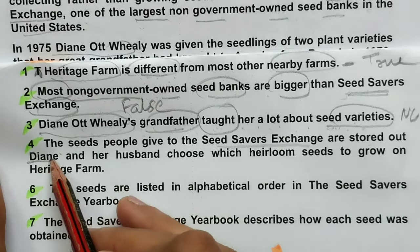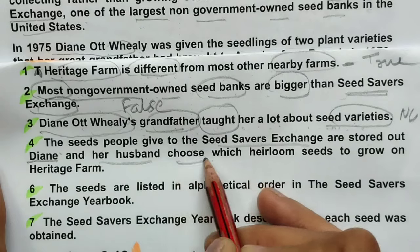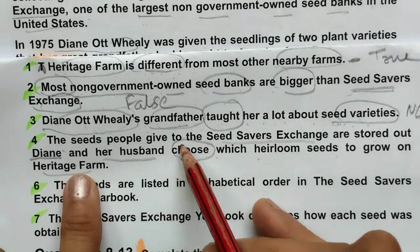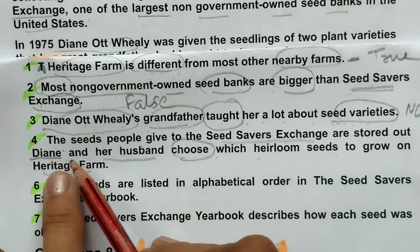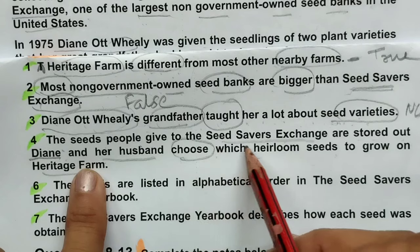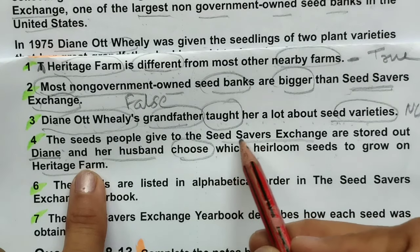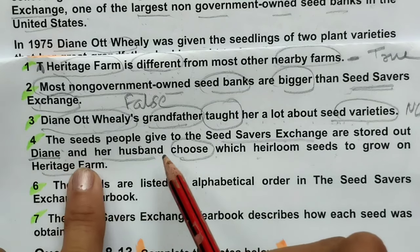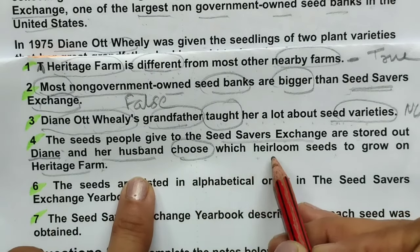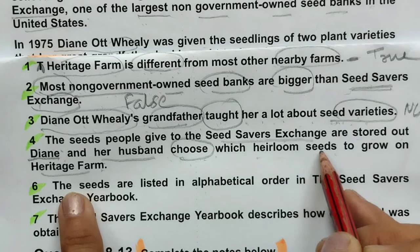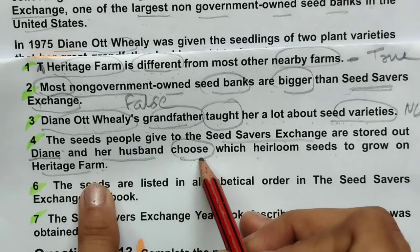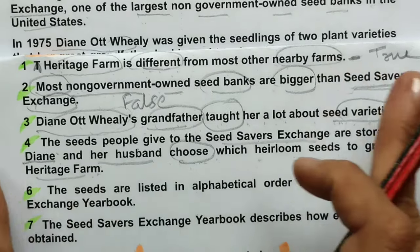Fourth question: 'The seeds people give to the Seed Savers Exchange are stored out.' And the fifth question: 'Dinah and her husband choose which heirloom seeds to grow on Heritage Farm.' If they choose the best seeds to grow, then False for stored out. Let's find the location. They are discussing what Dinah and her husband decided and what happens to donated seeds.